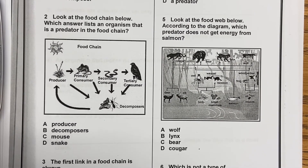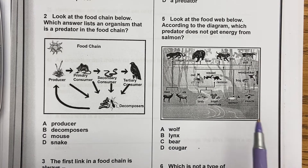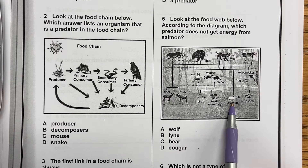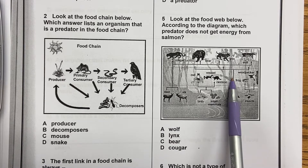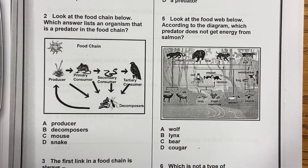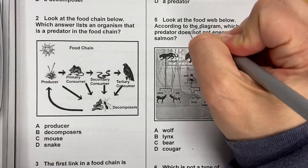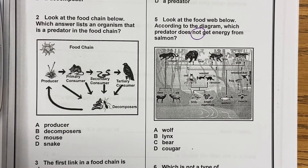Number five: Look at the food web below. According to the diagram, which predator does not get energy from the salmon? Your salmon is right here — salmon is a fish. If you follow that line up, you have arrows pointing into animals. The question is which predator does not get energy directly from the salmon? A, the wolf; B, the lynx; C, the bear; or D, the cougar?